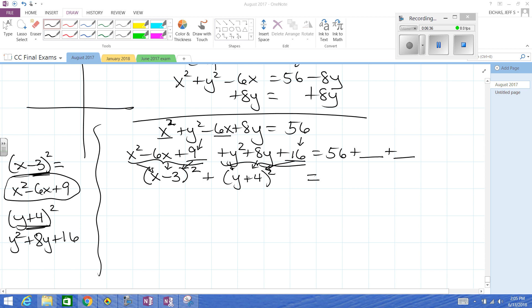Now, since I added 9 to the left side to keep it balanced, I need to add 9 to the right. Likewise, with the 16. So, then that's 25. Looks like it's 81. Let me just double check. Yep. 81.